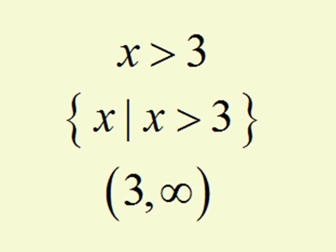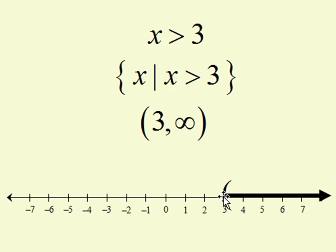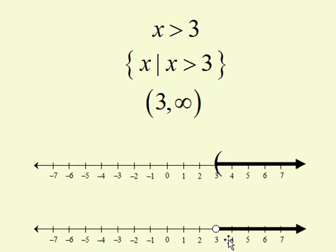There are two ways that these can be graphed. You may see this graphed on a number line with the parentheses on the 3, and then a ray continuing on to the right. You may also see this graphed with an open circle at 3, and a ray continuing to the right. It's the second method that we use in the WebAssign GraphPad.